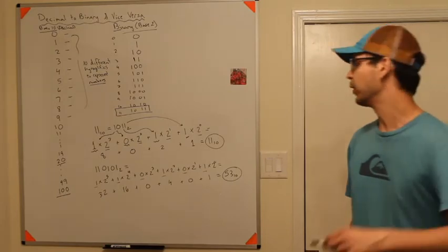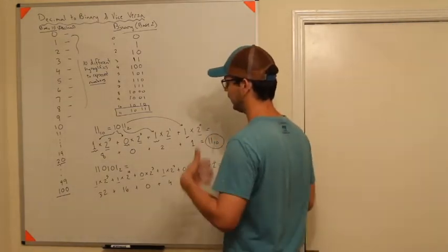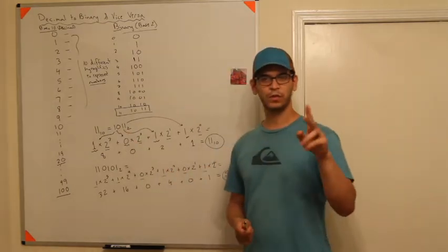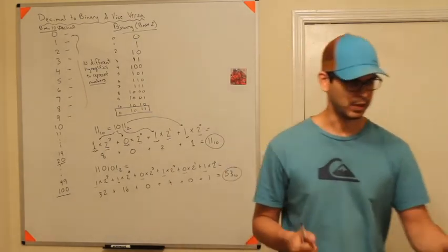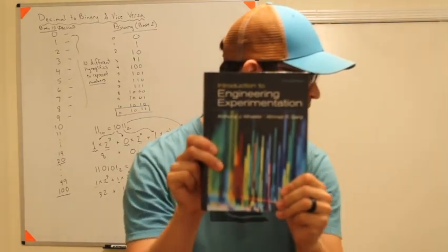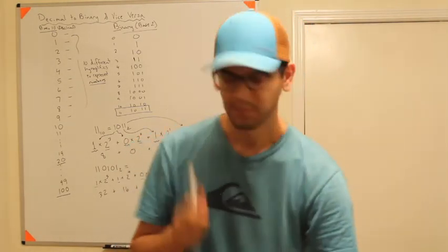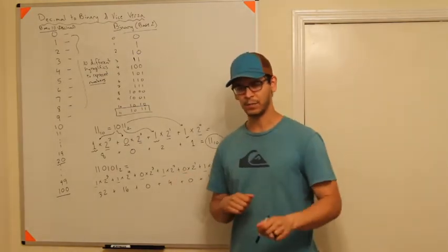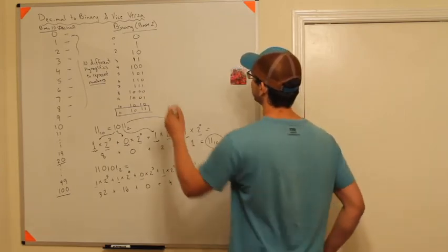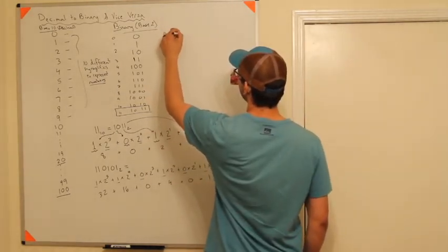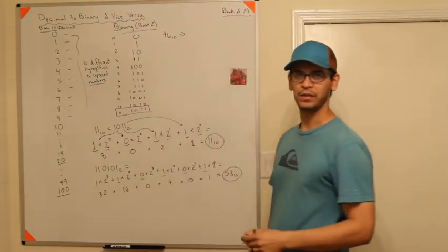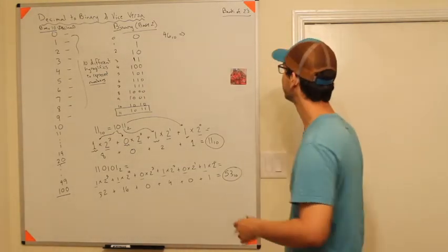Now we obviously need to go the other way: how do we take a number in decimal and convert it to binary? You can do two different methods. The textbook I'm using divides by two repeatedly and saves the remainder. What I like to do instead is take the number — say 46 base 10 — and make what I call my 'bank of twos.'